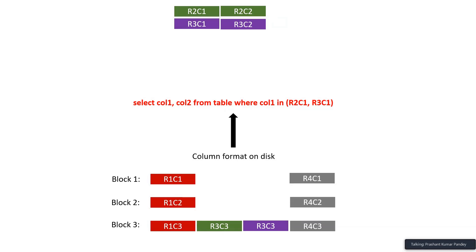That's why columnar formats are more efficient and faster for queries where you select only specific columns. If you are doing SELECT *, Spark will have to go to all the blocks. But if you are selecting specific columns, Spark will go only to those blocks which store those columns. Other blocks can be skipped. That's where columnar formats are more efficient.